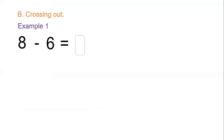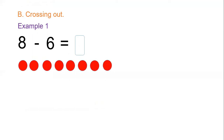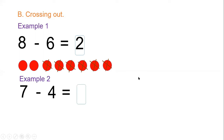Now let's look at subtraction by crossing out. We have eight minus six — let us have eight dots: one, two, three, four, five, six, seven, and eight. Now we will cross out six dots, then we check how many dots we are going to have left. We remain with two dots, so eight minus six equals two.